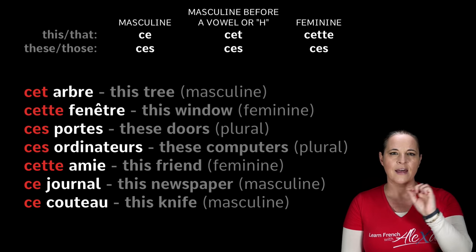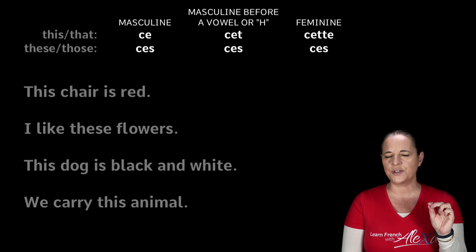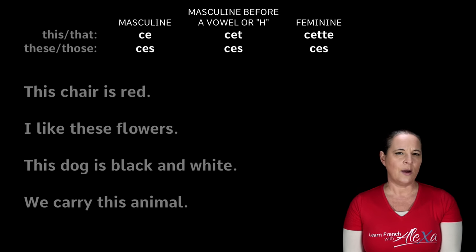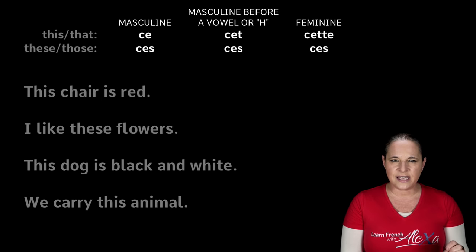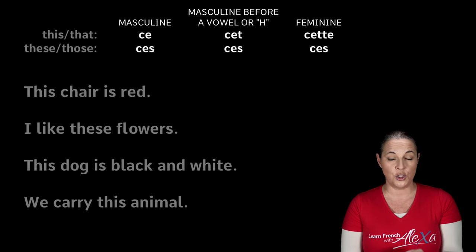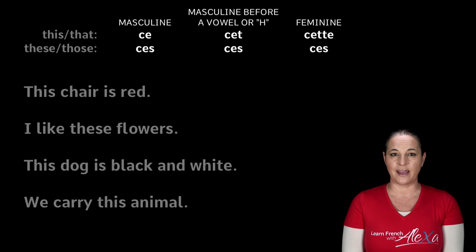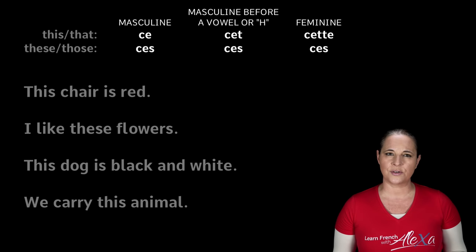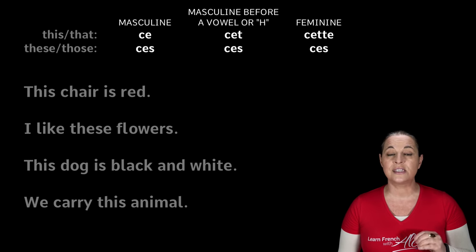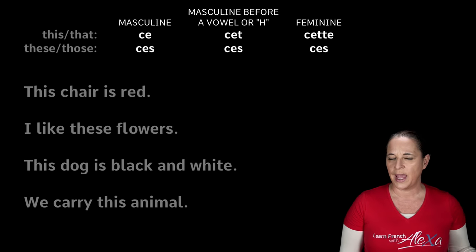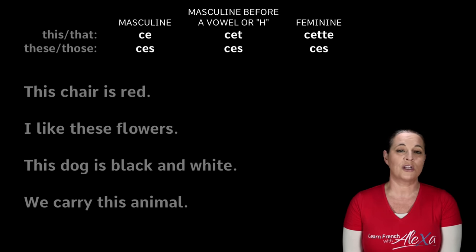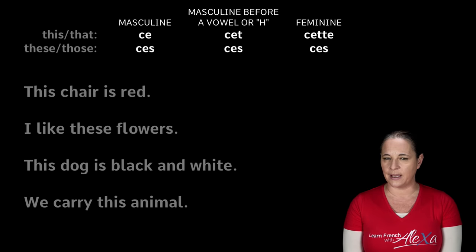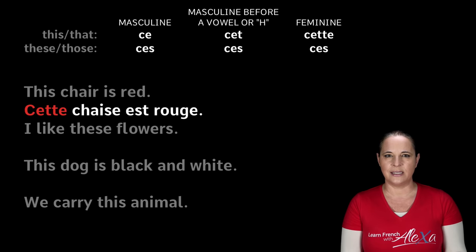Let's look at some sentences. This chair is red — how would you translate this? Chair in French is chaise, and it's feminine. So it would be: cette chaise est rouge. I like these flowers — how would you translate that?